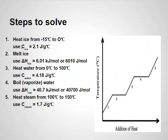Step one requires the specific heat capacity of ice: 2.1 joules per gram degree Celsius. For step two we need the delta H of fusion, which is 6.01 kilojoules per mole or 6,010 joules per mole. Step three uses the specific heat capacity of liquid water: 4.18 joules per gram degree Celsius. Step four involves vaporizing the water, so we use the delta H of vaporization: 40.7 kilojoules per mole, or 40,700 joules per mole. Finally, step five uses the specific heat capacity of steam: 1.7 joules per gram degree Celsius, to heat that steam from 100 to 150 degrees Celsius.